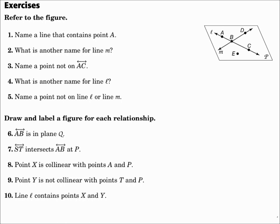Number 5. Name a point not on line L or line M. Well, there's line L. There's line M. E is the only point not on those lines.